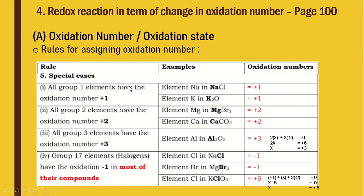Rule 5 covers special cases. First: all Group 1 elements have oxidation number +1. Sodium, potassium, rubidium — all have oxidation number +1. For example, Na⁺ gives +1. The same goes for Group 2 elements — for example, magnesium with electron configuration 2,8,2 must donate 2 electrons to be stable, becoming Mg²⁺, so its oxidation number is +2. Calcium Ca²⁺ also has oxidation number +2.